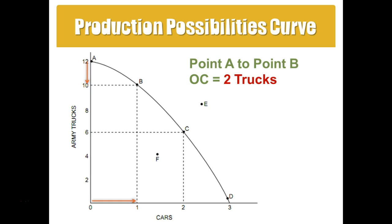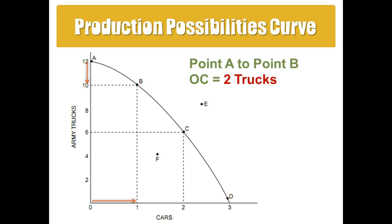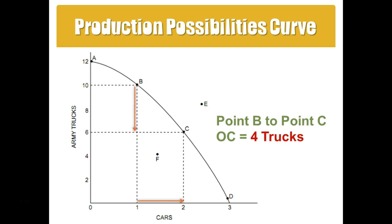If I was going to go from point B to C, then the opportunity cost of an additional car — going from one car to two cars — is going to be equal to four trucks, because I'm going to go from 10 to six. We recognize that we can't have as many trucks as we want and as many cars as we want, so we have to make these hard decisions.